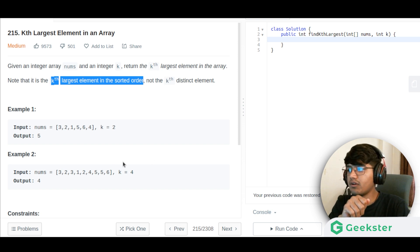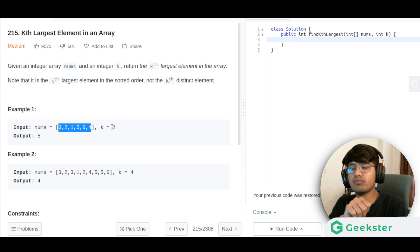For example, for the first example their values are 3, 2, 1, 5, 6, 4, and k is 2. The first largest element is 6, the second largest element is 5. It is pretty straightforward.